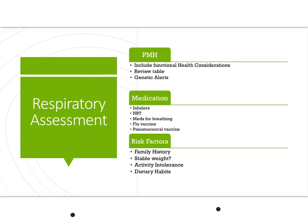Ask about their most recent flu and pneumococcal vaccines. Review the oxygenation assessment table on pages 1031 and 1032. When looking at risk factors, ask about family history, recent weight changes (intentional or unintentional), activity intolerance — being specific about what they could do a year ago versus now — and dietary habits.